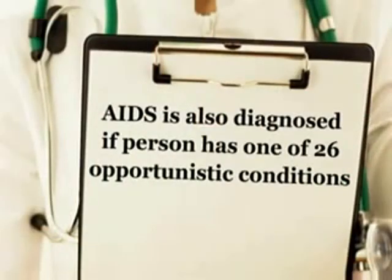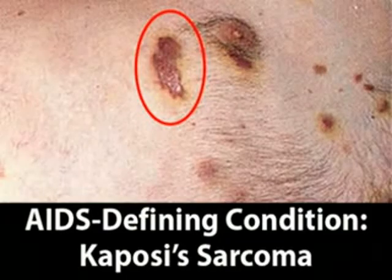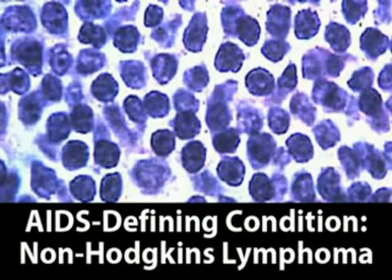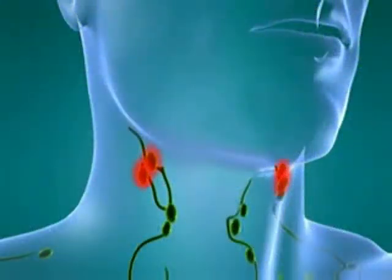Even if a person doesn't have a low CD4 count, they are still classified as having AIDS if they contract any one of 26 opportunistic conditions. These are a group of illnesses that don't generally occur in people with functioning immune systems, but do show up in AIDS patients. Two of these are cancers. Kaposi's sarcoma results from a tumor in the blood vessel walls and appears as disfiguring pink or purple lesions on the skin and mouth. The other cancer, non-Hodgkin's lymphoma, originates in the disease-fighting blood cells known as lymphocytes and appears as swelling of the lymph nodes.